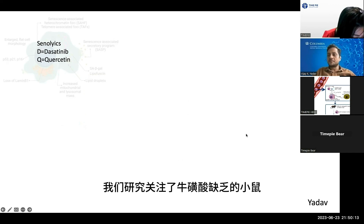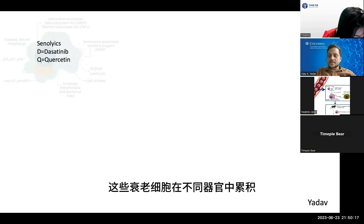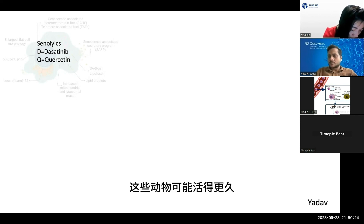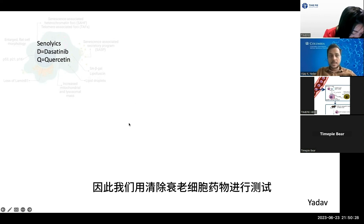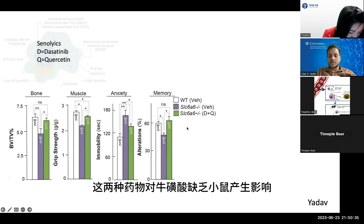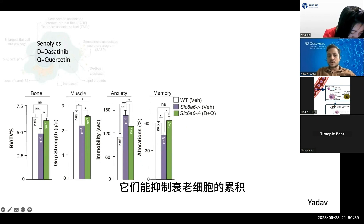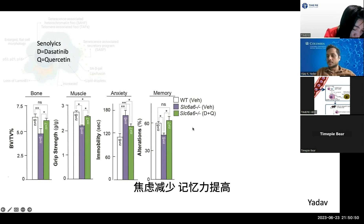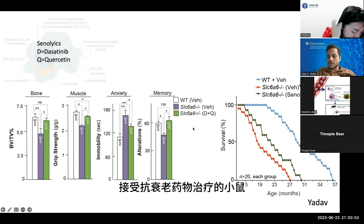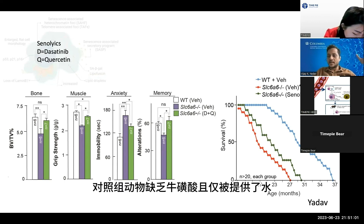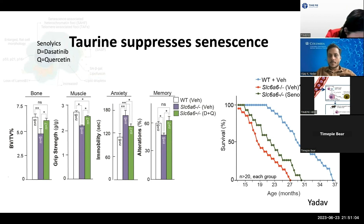To directly test whether senescent cells contribute to taurine-dependent aging phenotypes, we turned to taurine-deficient mice, which have more senescence accumulating in their organs. We reasoned that removing senescent cells might extend lifespan, and tested this using the senolytic drugs dasatinib and quercetin. These molecules suppressed senescent cell accumulation: treated animals showed improved bone density, more muscle strength, less anxiety, and improved memory. These animals lived around 20–22% longer compared to taurine-deficient control animals given water. Taurine suppresses senescence.